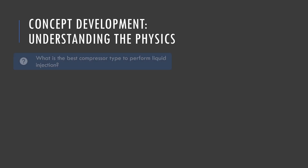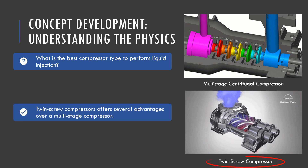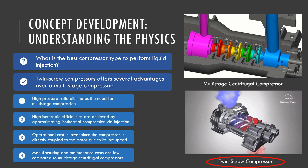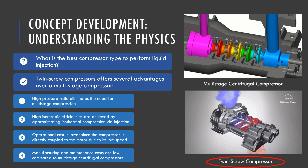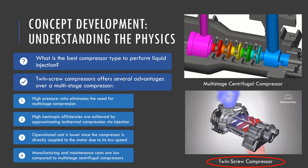The best compressor type to perform liquid injection for a wet compression process is the twin-screw compressor. Compared to a multi-stage centrifugal compressor, it offers a higher compression ratio eliminating the need for multi-stage compression, higher isentropic efficiency due to injection, lower operational cost because the compressor is directly coupled to the motor due to its low speed, and lower manufacturing and maintenance costs. As a result, a single-stage water-injected twin-screw compressor is chosen in this study to improve the performance of the system.